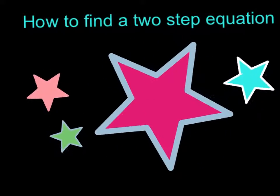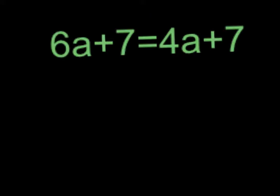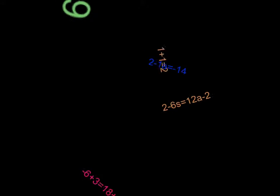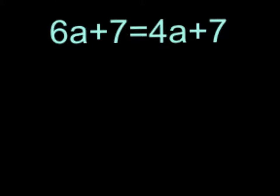How to find a two-step equation. Today we are going to figure out what a equals in 6a plus 7 equals 4a plus 7. Now you may be thinking, oh these numbers, how could I do this? It's very easy, all you have to do is follow a few simple steps and you will have your answer.